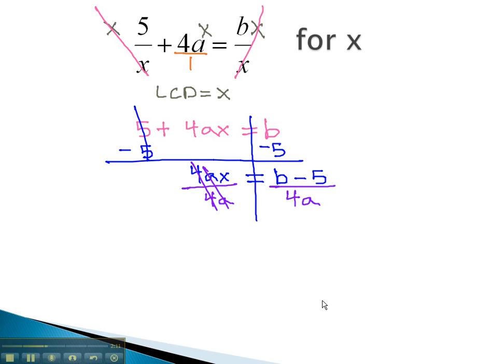The 4's and a's divide out, and we're left with x equals the expression b minus 5 over 4a. With the variable alone, this becomes our final solution.